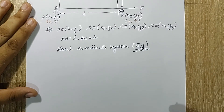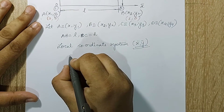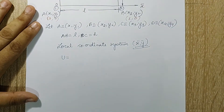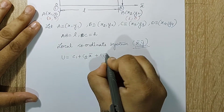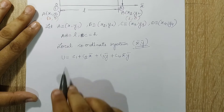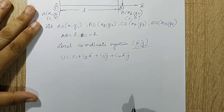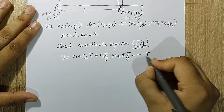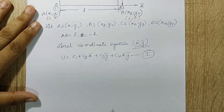Now let's take an equation as we did for the triangular element. If you remember, there were three nodes at the vertices and we had taken an equation for displacement u. Here also I am taking an equation: u = c1 + c2*x̄ + c3*ȳ + c4*x̄ȳ. Since there are four vertices I need four constants c1, c2, c3, c4. Previously with three nodes we had only three unknowns. I will mark this as equation one and calculate all four constants.